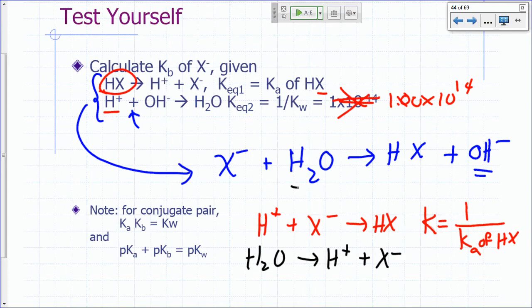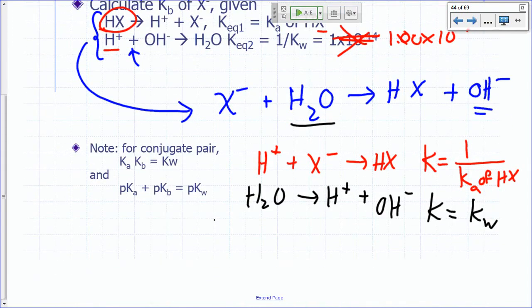And then you flip the other one too. You want hydroxide on the product side, so you flip that one. So you write H2O yields H plus plus hydroxide. You want H2O on the left side, you see? What's the K for this? That's just KW, right?